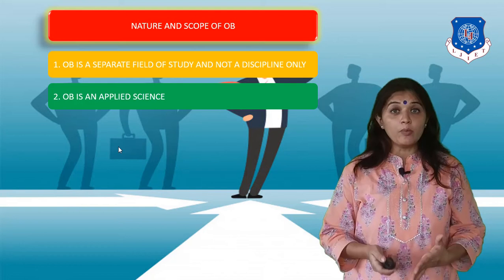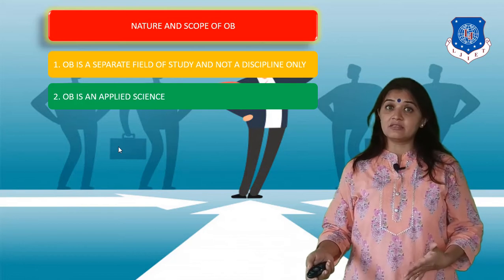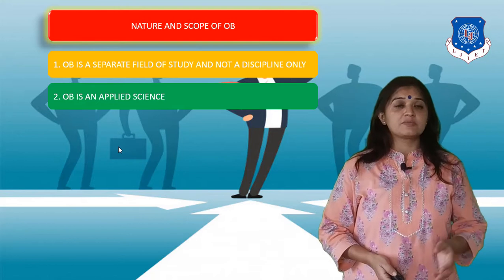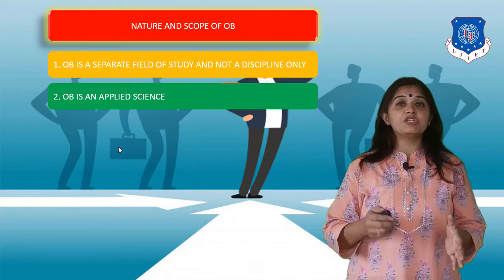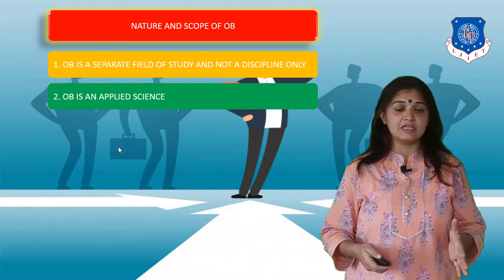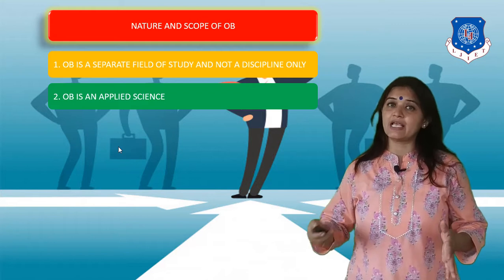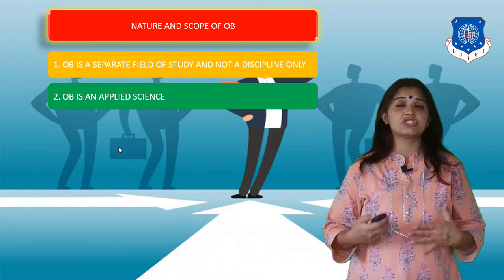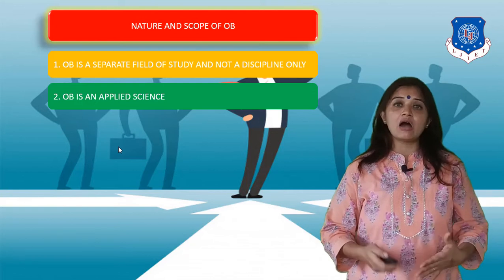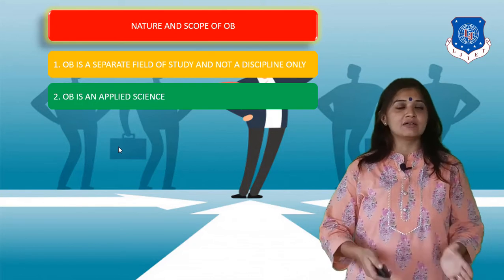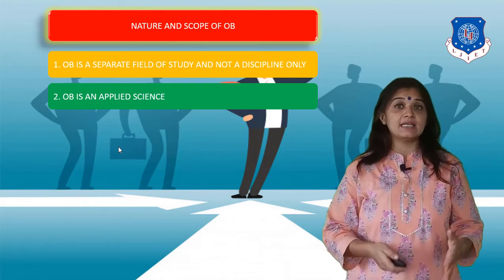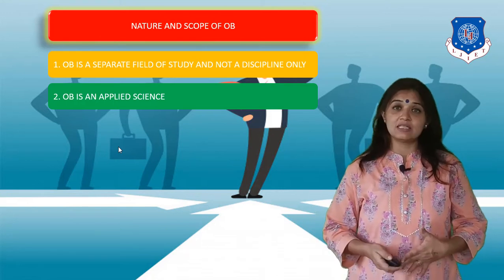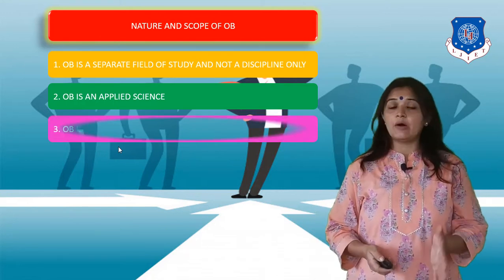Secondly, OB is an applied science. It is called a science because in science we do research and experiments, and through the results of those experiments we prove certain facts. Similarly, organizational behavior theories are the result of certain researches and they can be applied in practical life, and that is why we can say OB is an applied science.